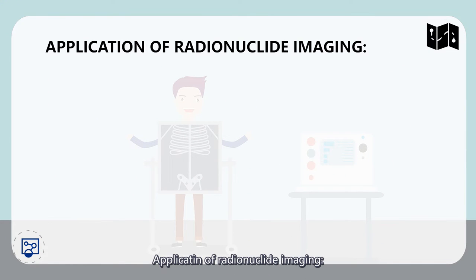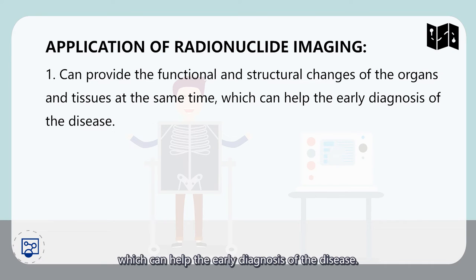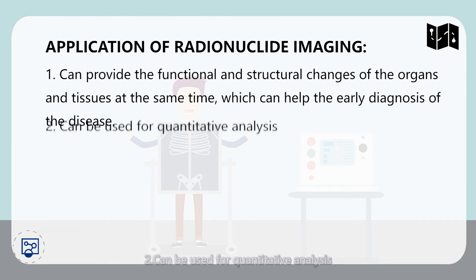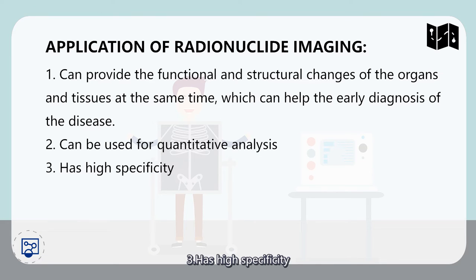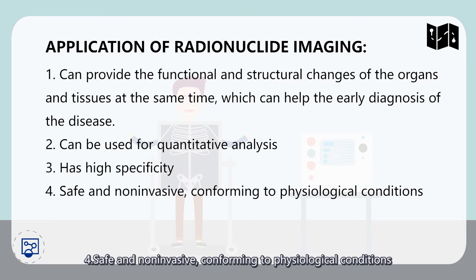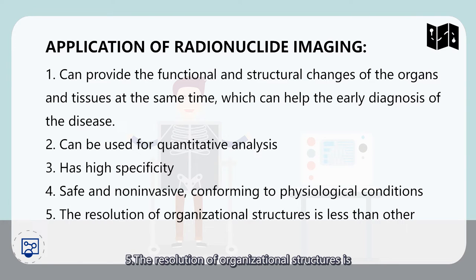Applications of radionuclide imaging: first, it can provide functional and structural changes of the organ and tissue at the same time, which can help in the early diagnosis of disease. Second, it can be used for quantitative analysis. Third, it has high specificity. Fourth, it is safe and non-invasive, conforming to the physical condition. Fifth, the resolution of organizational structures is less than other imaging methods.